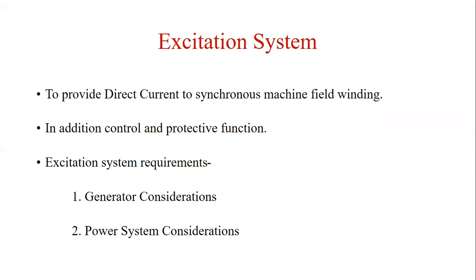The basic function of an excitation system is to provide direct current to the synchronous machine field winding. In addition, the excitation system performs control and protective functions essential to satisfactory performance of the power system by controlling the field voltage and thereby the field current. The control function includes the control of voltage and reactive power flow and the enhancement of power system stability as well. The protective functions ensure that the capability of the synchronous machines, excitation system and other requirements are not exceeded.